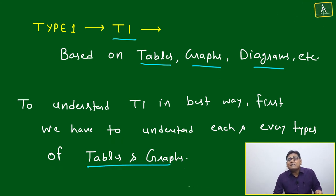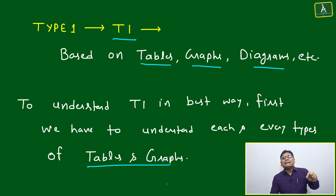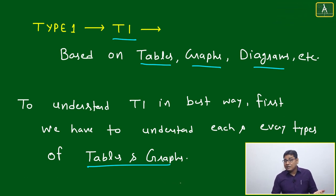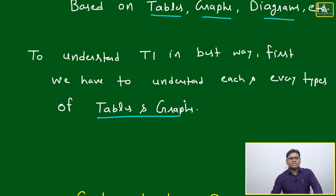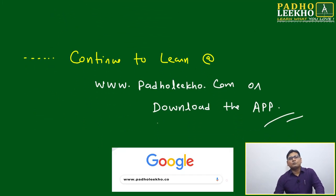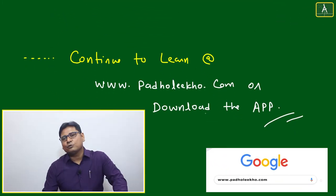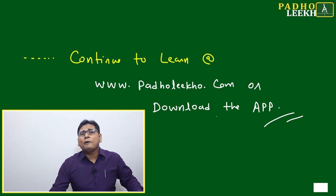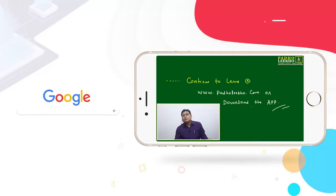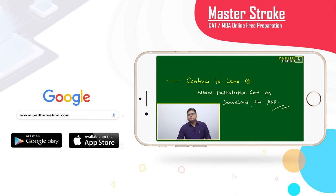To better understand table, graph, and diagram-based DI caselets, we need to know how many types of tables and graphs are frequently used for CAT purposes. Continue learning at parolico.com or download the mobile app. For each remaining type of DI caselet, you will develop the mathematical and logical tools needed to solve any level of questions. Thank you — continue to learn.